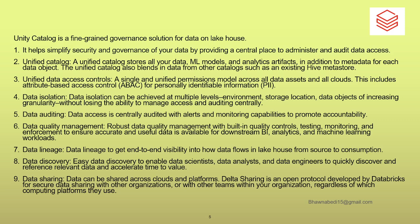Unity Catalog is a premium offering and it is available across multiple clouds — it is available on Azure, on GCP, and on Amazon as well. It is a unified catalog in the sense that you can store all your data, your ML models, your artifacts — all can be stored inside Unity Catalog, and everything becomes an object inside that catalog. Once it is an object, you can provide selective access to that particular object.